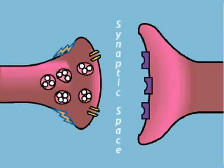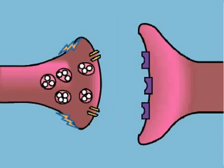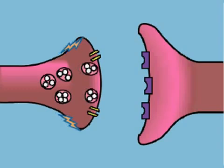The action potential cannot cross the synaptic space. When it reaches the axon terminal, it causes membranous sacs, called vesicles, to move toward the membrane of the axon terminal.